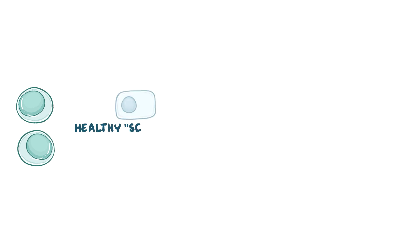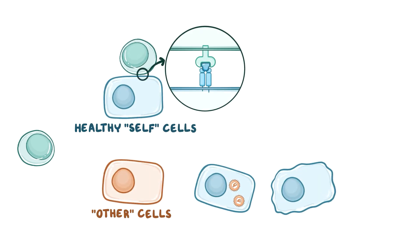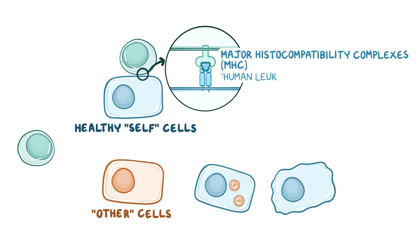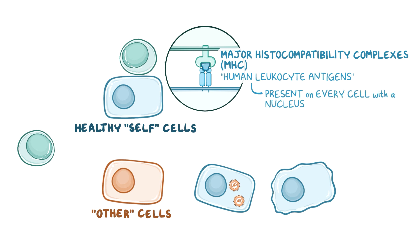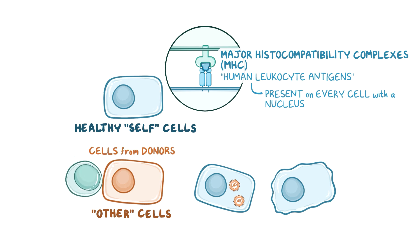Normally, immune cells can differentiate between healthy self and other cells by inspecting for the presence or absence of the normal self-major histocompatibility complexes, also called human leukocyte antigens, present on the surface of every cell that contains a nucleus. Healthy self-cells are left alone. Others include cells from other people or donors and self-cells that are infected, damaged, or stressed.